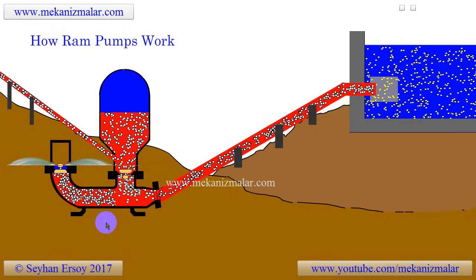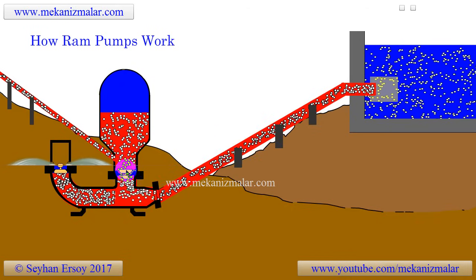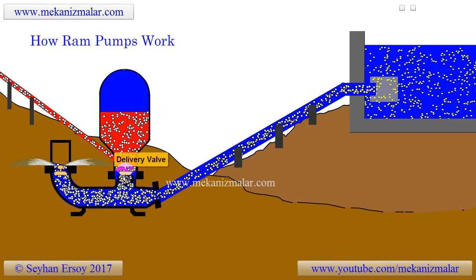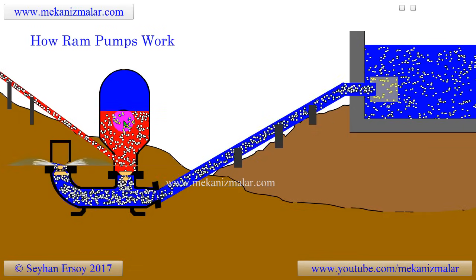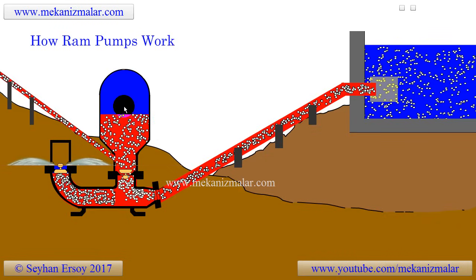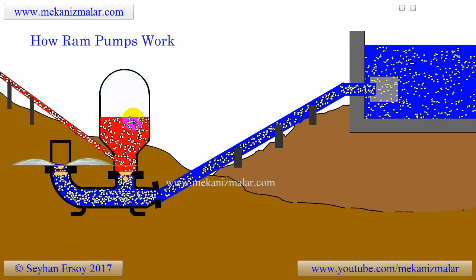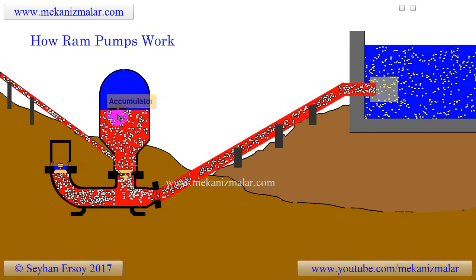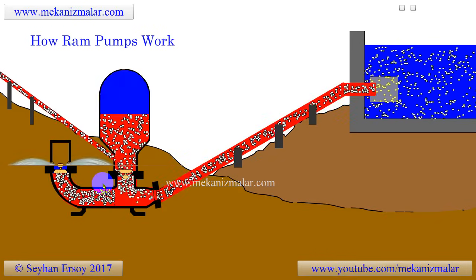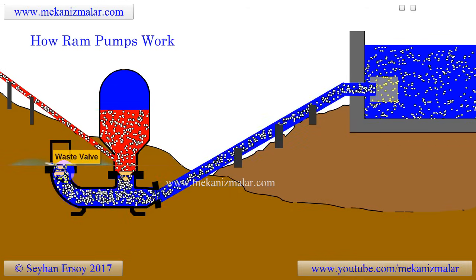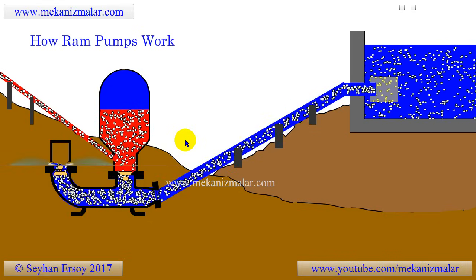Increased water pressure within the pipes must be relieved to prevent damage to the system, and this is done by the delivery valve. The high pressure in the inlet pipes opens the delivery valve, which directs the pressurized water to the accumulator compartment and the delivery pipe at the same time. While the water level is rising inside the accumulator, the air pressure trapped above increases. The water closest to the waste valve then moves backward toward the accumulator, causing the waste valve to open, and the cycle repeats. When the waste valve opens, the delivery valve closes, and vice versa.